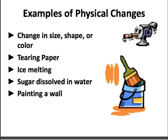Some examples of physical changes include a change in size, shape, or color. For example, if you add food coloring to cake batter to make rainbow cakes, that is a physical change because it's still cake batter. If you tear paper, it's still paper. And if you dissolve sugar in water — this is one that even a lot of my 11th graders struggle to remember — dissolving something in water is actually a physical change because you're not getting a new substance.